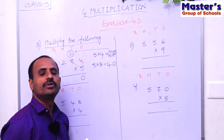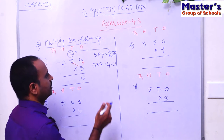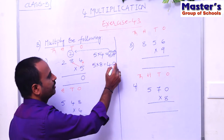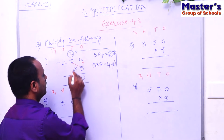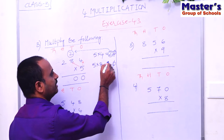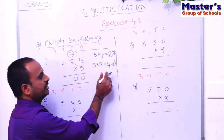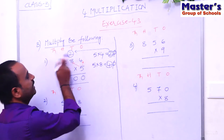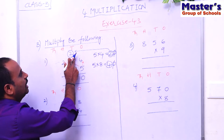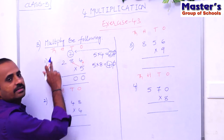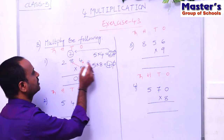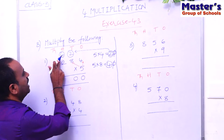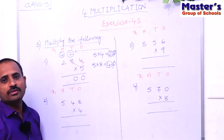If the product is a two-digit number, we have to carry. Write the second digit 0 under tens place, and carry the first digit 4 to the next place — the hundreds place. We have to add this carried number to the product.